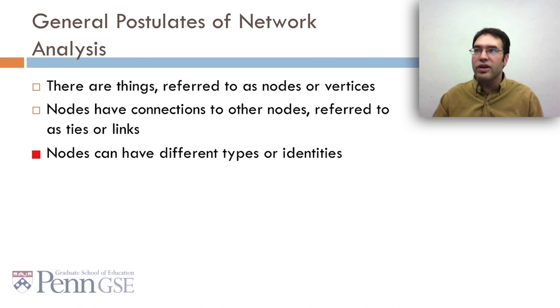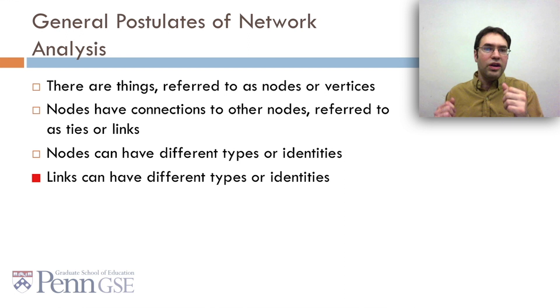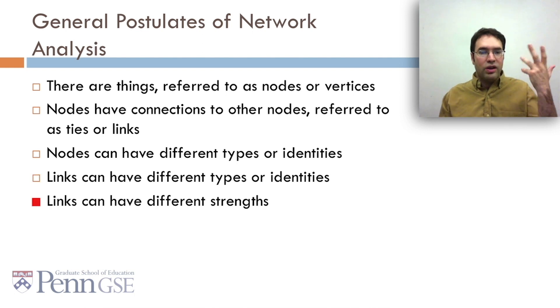Nodes can have different types of identities. Maybe we have instructors, students, TAs. And links can have different types of identities. Maybe we have helpful posts and insult posts and off-topic posts. And links can have different strengths. Maybe we have best buddies and kind of bare acquaintances.